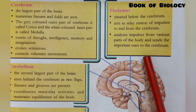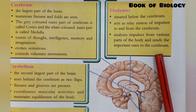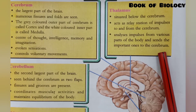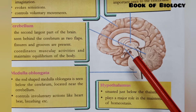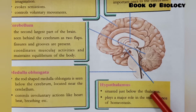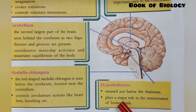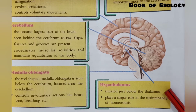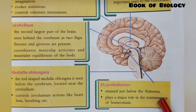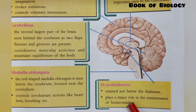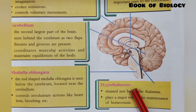The next part is the hypothalamus. It is situated just below the thalamus. The hypothalamus plays a major role in the maintenance of homeostasis, which means maintaining the overall balance of the entire body.